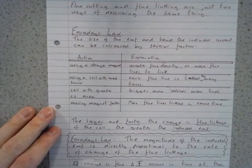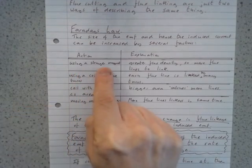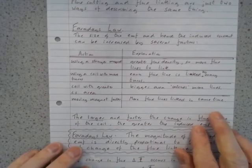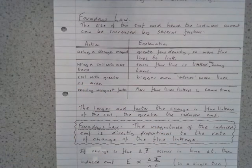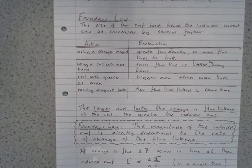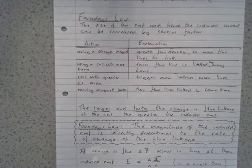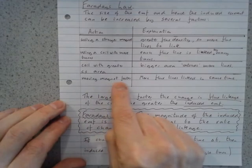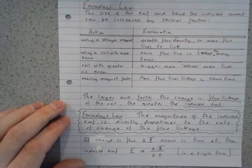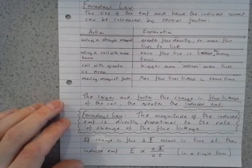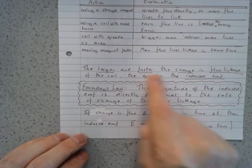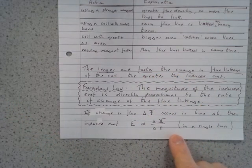What we see from the experiments is that the size of the EMF depends on several factors. One is the strength of the magnetic field. Another is the number of turns on the coil if it is a coil. Another is the area of the coil, so a bigger coil is capable of catching more field lines and therefore it will induce a bigger EMF. And the other thing is that if you change the speed at which the magnet or the conductor moves, that changes the EMF as well. In general, the larger and the faster the change in flux linkage occurs, the greater the induced EMF.